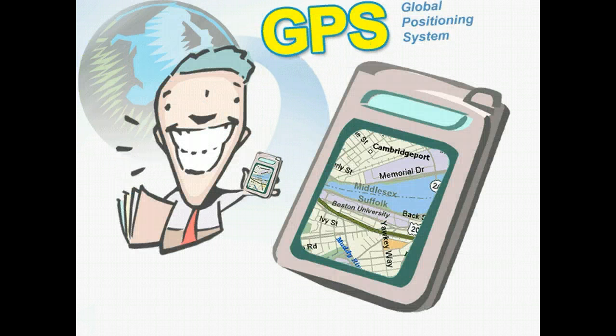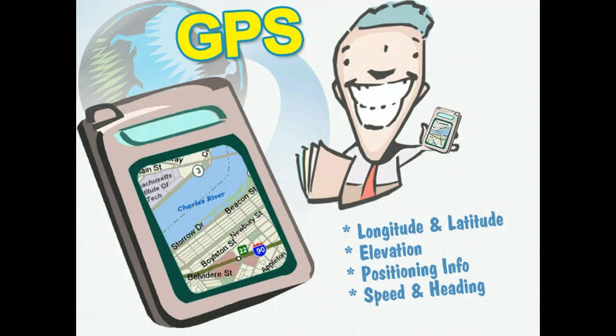With the development of global positioning technology and a global positioning system, or GPS unit, your lessons can interact with areas outside the school. A GPS unit is a handheld device that reports your location on earth, returning longitude and latitude coordinates as well as elevation.